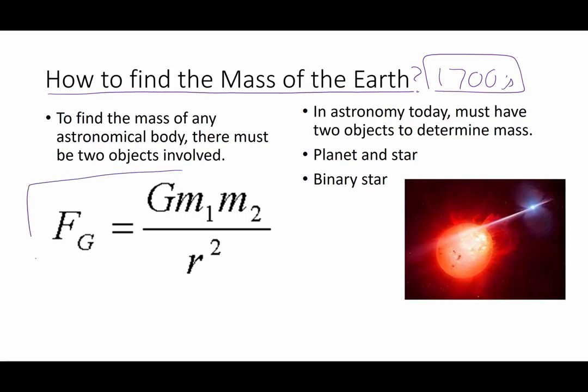Now Newton had determined his universal law of gravity, but the universal law of gravity contains two masses. So you have to know everything else really well before you can actually start massing the Earth. And one of the things we did not know is G. We did not know the universal gravitation constant.